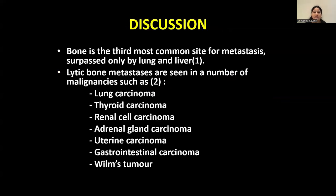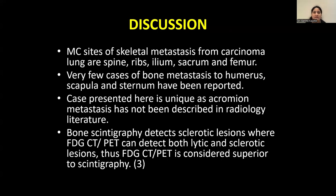Coming to the discussion, bone is the third most common site for metastasis, surpassed only by lung and liver. Lytic bone metastases are seen in malignancies such as lung carcinoma, thyroid carcinoma, renal cell carcinoma, adrenal gland carcinoma, uterine carcinoma, GI carcinoma, and Wilms tumor. Most common sites of skeletal metastasis from carcinoma lung are spine, ribs, ileum, sacrum and femur. Very few cases of bone metastasis to humerus, scapula and sternum have been reported, making this case unique as acromion metastasis has not been previously described. Bone scintigraphy detects sclerotic lesions, whereas FDG PET-CT can detect both lytic and sclerotic lesions; thus FDG PET-CT is considered superior to scintigraphy.